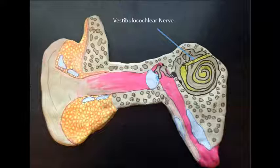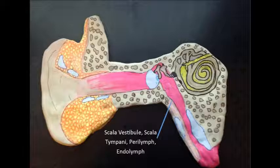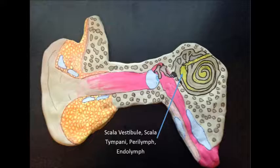And the inner ear houses the round window, the cochlea, the vestibular cochlear nerve, the auditory tube, the scala vestibule, the scala tympani, the perilymph, and the endolymph.